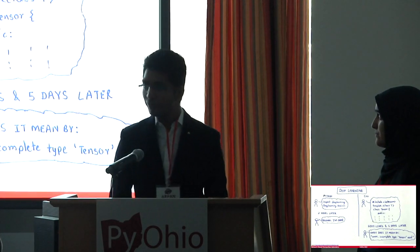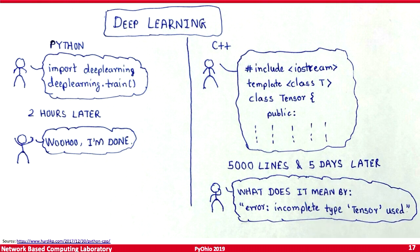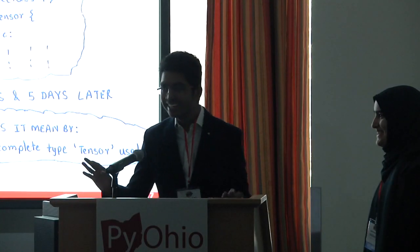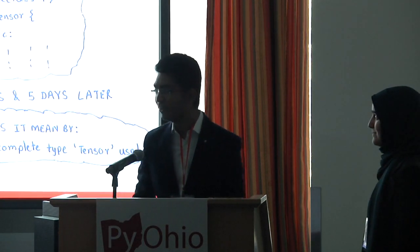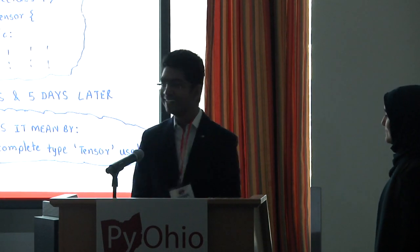For instance, if you want to implement a deep learning model using Python, you just have to import the DL framework and call deep learning train — after two hours, you're done. On the other hand, if you want to do it in C++, you'd have to write 5,000 lines of code, taking huge amounts of time, and then you still have to debug each and every line. That's why Python is awesome — you can use it to implement your deep learning model.